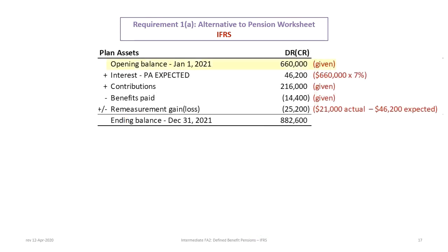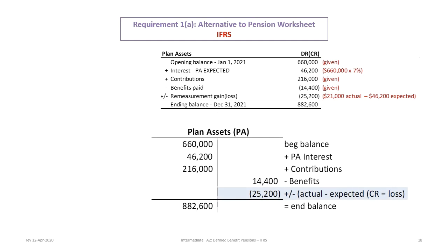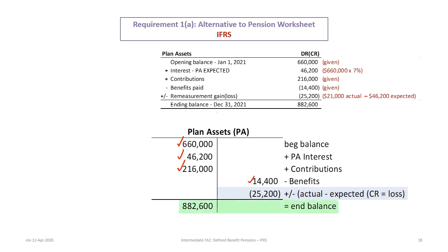For the plan assets alternative: start with the beginning balance of $660,000, add the expected return of $46,200, add contributions of $216,000, subtract benefits of $14,400, then take the difference between actual and expected return to get the remeasurement gain or loss. In this case it's a remeasurement loss because the actual return of $21,000 is less than the expected $46,200 — a difference of $25,200 — yielding an ending balance of $882,600. In T-account form: debit beginning balance $660,000, add expected interest and contributions, subtract benefits, and credit the $25,200 remeasurement loss to get the ending balance of $882,600.